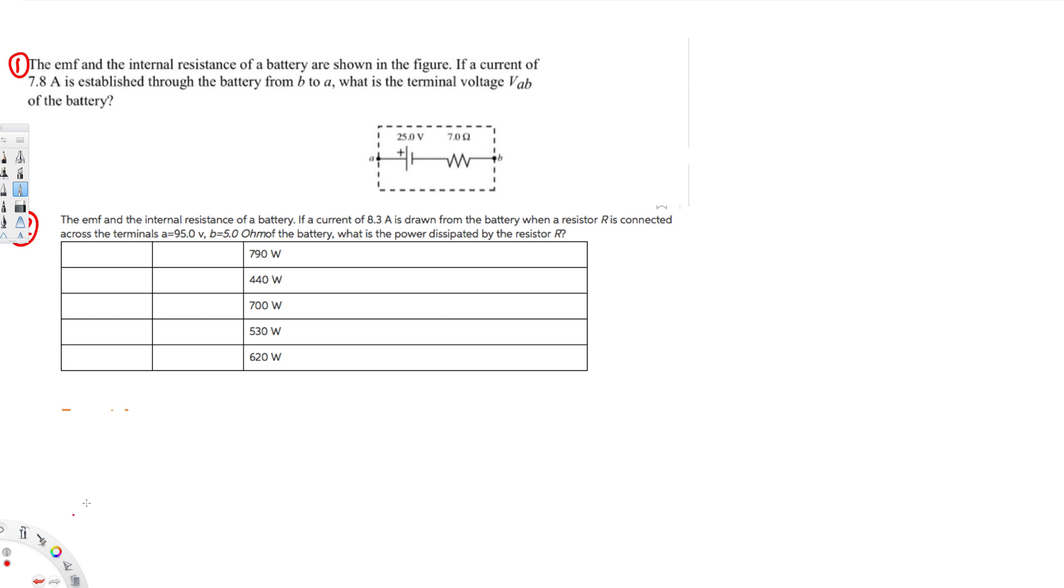So let's go ahead and find that one. First we know that V is equal to IR. So here they have provided the current, that's 7.8 ampere, and this 7 ohm is going to be multiplied by 7 ohm. If you calculate this one, that's going to give you 54.6 voltage.